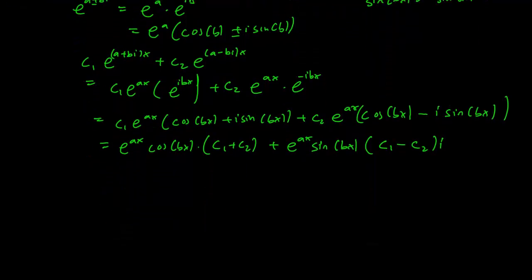So remember that c1 and c2 are arbitrary constants. So we can just rewrite this in the form of c1 plus c2 is just another c1 tilde. And c1 minus c2 is just another constant which we call c2 tilde. And there you go. So instead of writing c1 e to the a plus b i x and c2 e to the a minus b i x, you can write it down as c1 e to the a x cos b x and c2 e to the a x sin b x.